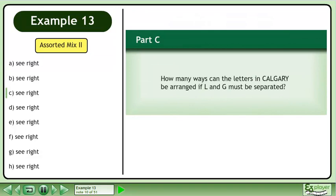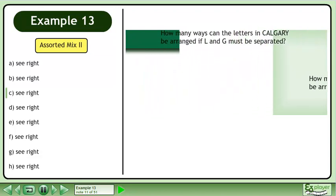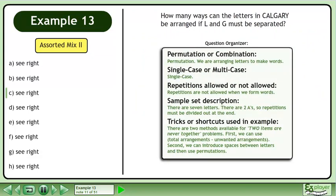Now we'll move on to part C. How many ways can the letters in Calgary be arranged if L and G must be separated?